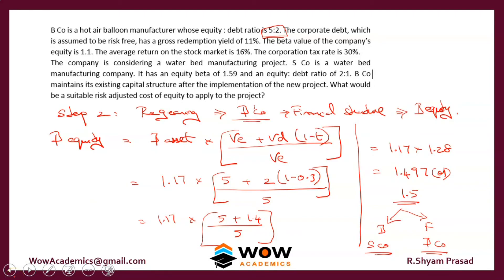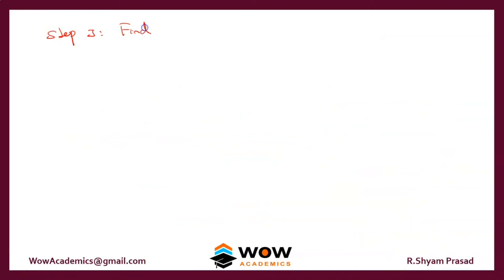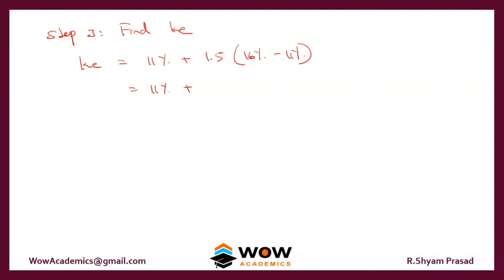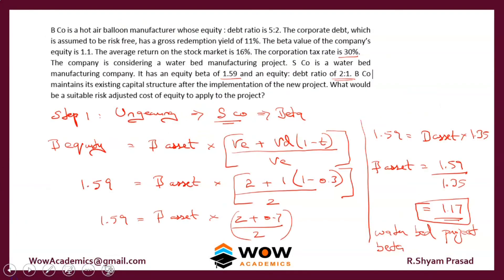Step 3 is to find Ke. Ke equals Rf plus beta times (Rm minus Rf). Rf is 11%, the beta we calculated is 1.5, and Rm is 16%. So Ke = 11% plus 1.5 times (16% minus 11%) = 11% plus 1.5 times 5% = 11% plus 7.5% = 18.5%. So the adjusted cost of equity to apply to the project is 18.5%.